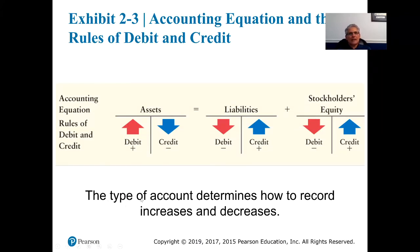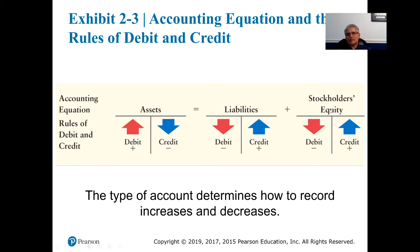The type of account determines how to record increases and decreases. It doesn't matter what asset it is — cash, accounts receivable, inventory, supplies, land — if you're going to increase it, it's a debit; if you're going to decrease it, it's a credit. For liabilities, to increase accounts payable it's a credit; to decrease a liability it's a debit. For stockholders' equity: common stock increases equity so it's a credit; revenues are increases so they're credits too. However, expenses and dividends decrease stockholders' equity — therefore they are debits.